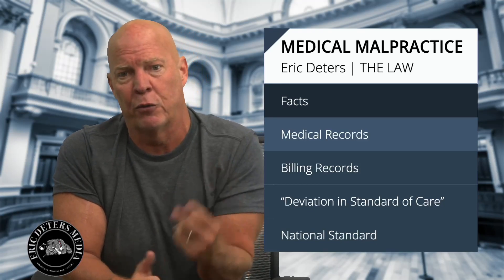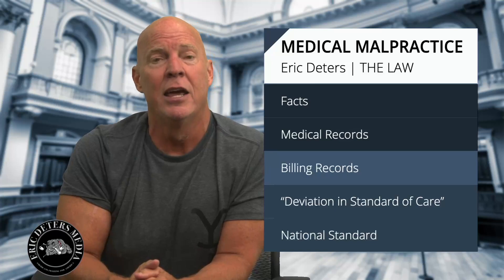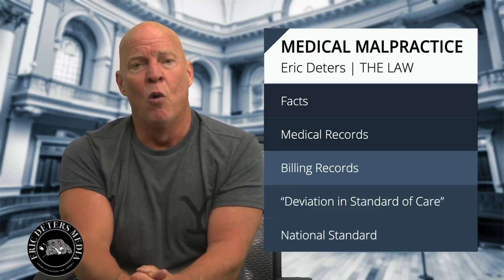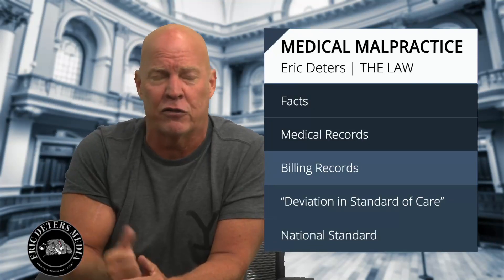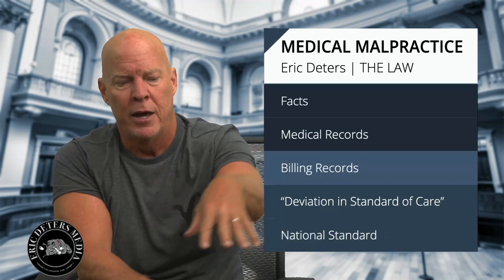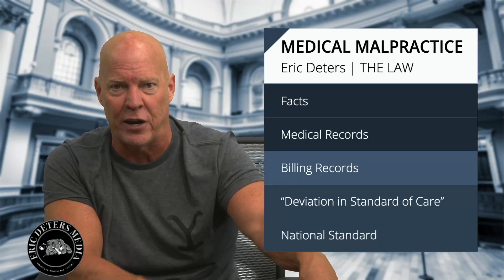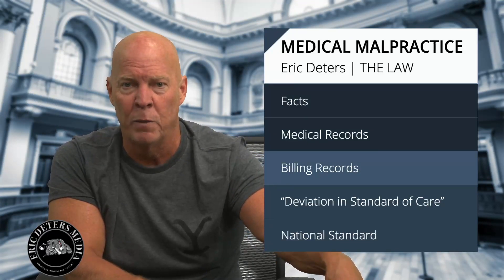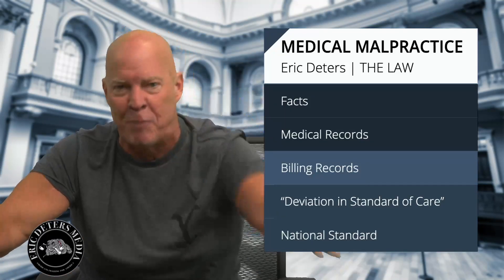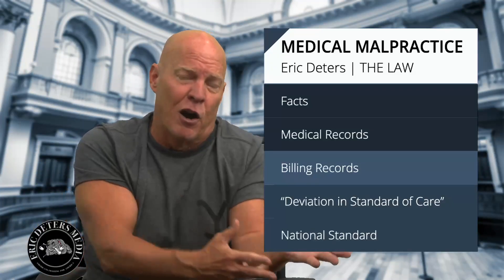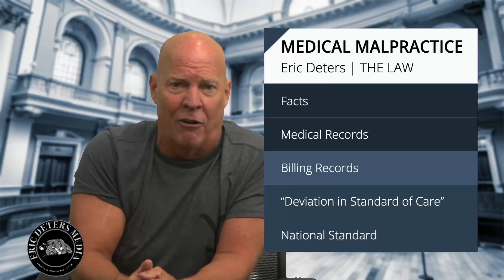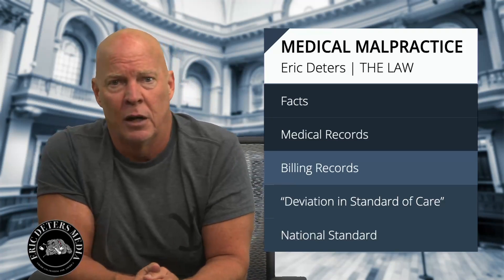The billing records are very important for two reasons: they will reflect what medical treatment you had, and they will also help establish possible damages. We need to know whether Medicare, Medicaid, or private insurance paid those bills, because they have what's called a lien on it. If you pursue a medical malpractice case and you are successful, you have to work out with your own insurance company or Medicare and Medicaid the payback of what they paid on your bill.